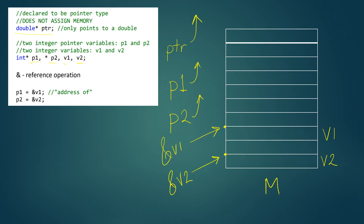So when you declare integers, doubles, objects, or anything, you actually get allocated memory. When you declare a pointer, you do not get memory allocated. Now, you can use the reference operator to get the address of a variable. V1 is our integer, and if you started memory at zero and went down, V1 is located at a specific address, and V2 is located at another address. For us, the value of the address is not important — the address is not an integer, it is a location that points to a certain type of data. Each time you execute your program, you are going to point to a different location.